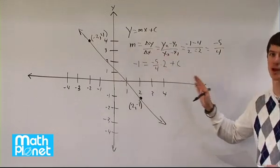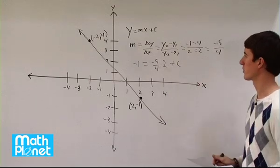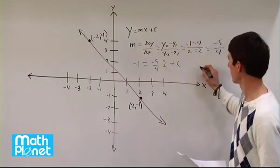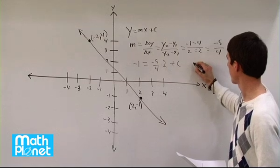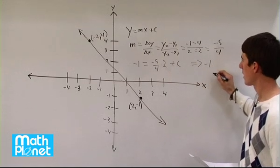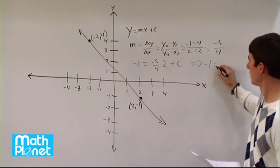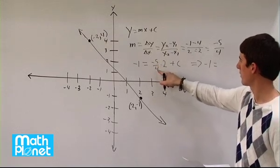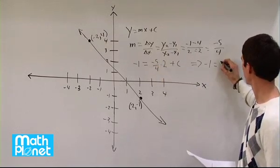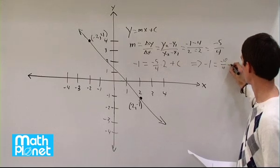And then we just have a single equation, one unknown, and we can solve for c. So let's simplify that a little bit. We have negative one equals two times negative five over four. That could simplify to negative ten over four, plus c.